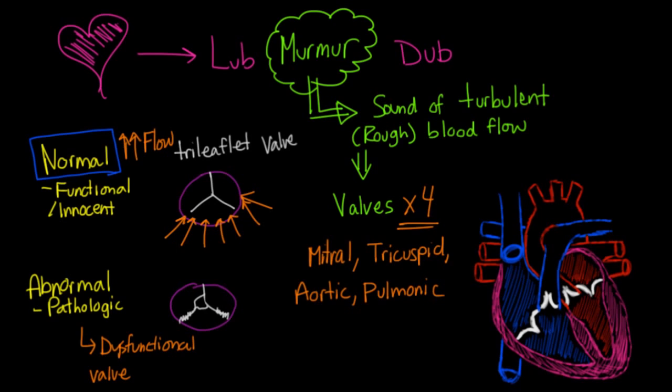And so now, either not enough blood can get through, or blood can actually leak back when it's not supposed to. And so again, it's really important to know that in this case, the valve is what is abnormal.